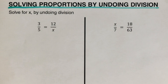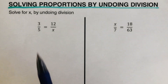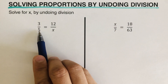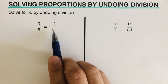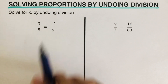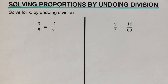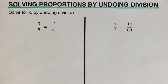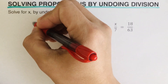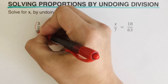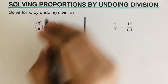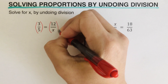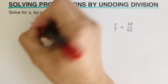We're going to go over this problem using undoing division. In this problem, 3 is divided by 5 and 12 is divided by x. Our task is to undo the division — to get rid of the numbers in the denominator. The opposite of division is multiplication, so we are going to undo the division by multiplying both sides by 5, the denominator of the first fraction.